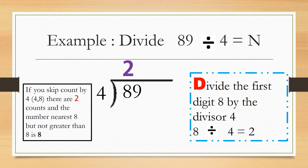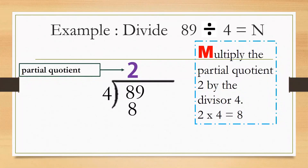Hint: if you skip count by 4, there are 2 counts and the number nearest 8 but not greater than 8 is 8. So our first partial quotient is 2. Next step is multiply — multiply the partial quotient 2 by the divisor 4. 2 times 4 equals 8.